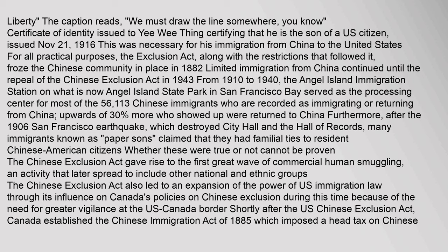Certificates of Identity were issued to verify immigration status, as was necessary for immigration from China to the United States. The Exclusion Act, along with the restrictions that followed, froze the Chinese community in place in 1882. From 1910 to 1940, the Angel Island Immigration Station in San Francisco Bay served as the processing center for most of the 56,113 Chinese immigrants recorded as immigrating or returning from China; upwards of 30 percent more who showed up were returned to China. After the 1906 San Francisco earthquake destroyed City Hall and Hall of Records, many immigrants known as 'Paper Sons' claimed familial ties to resident Chinese American citizens. The Chinese Exclusion Act also gave rise to the first great wave of commercial human smuggling.